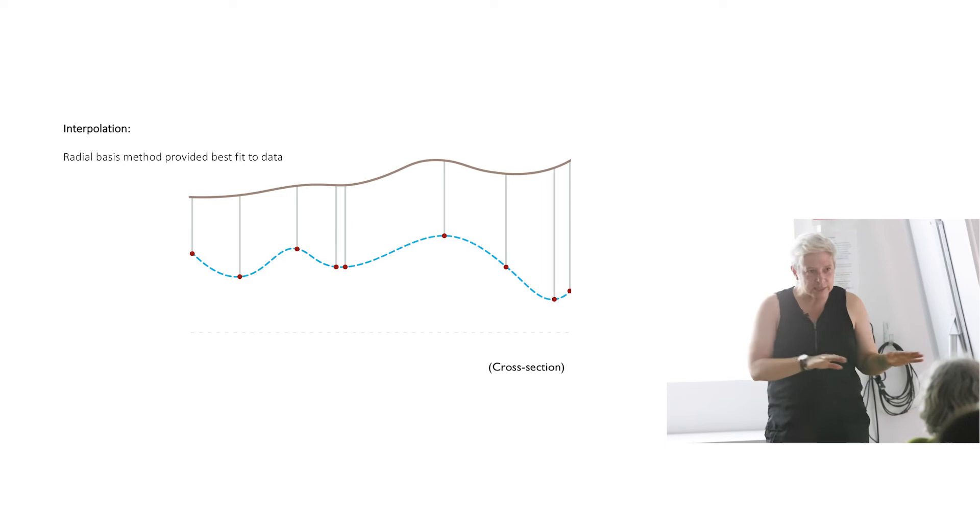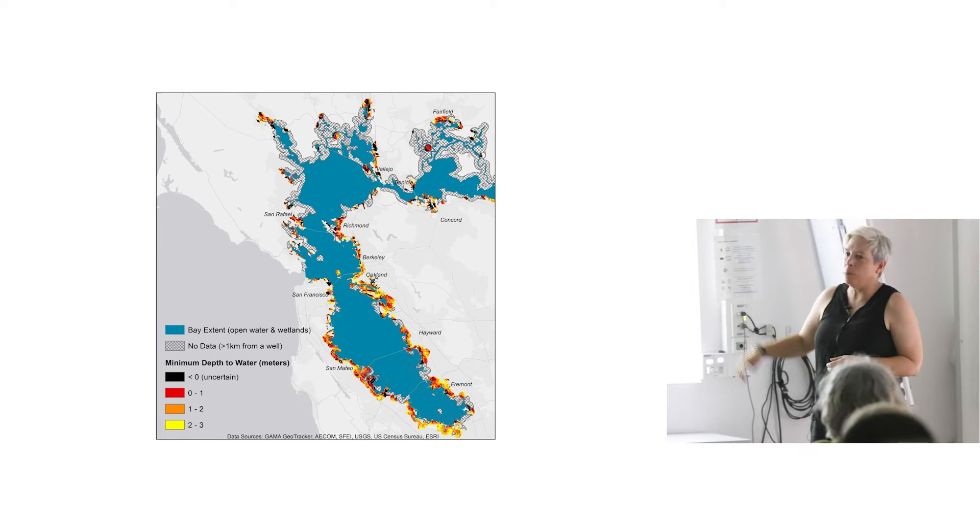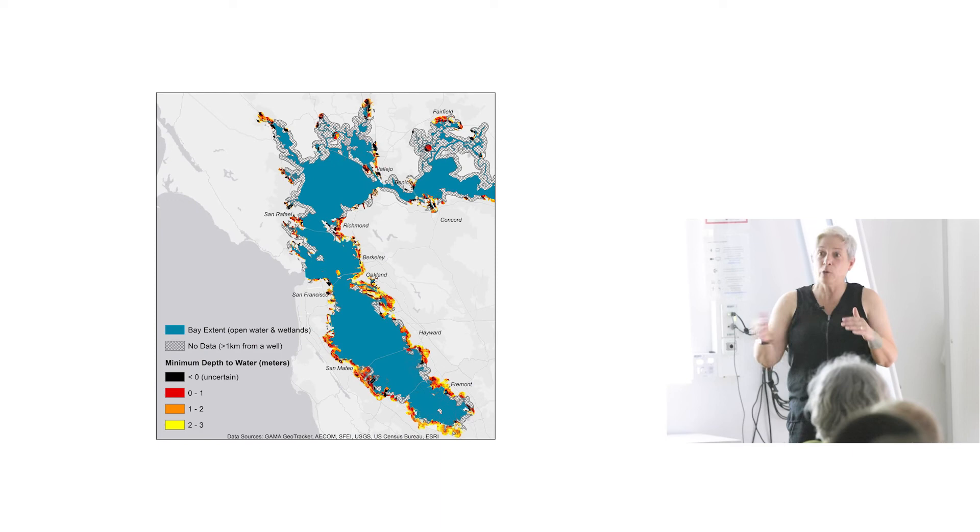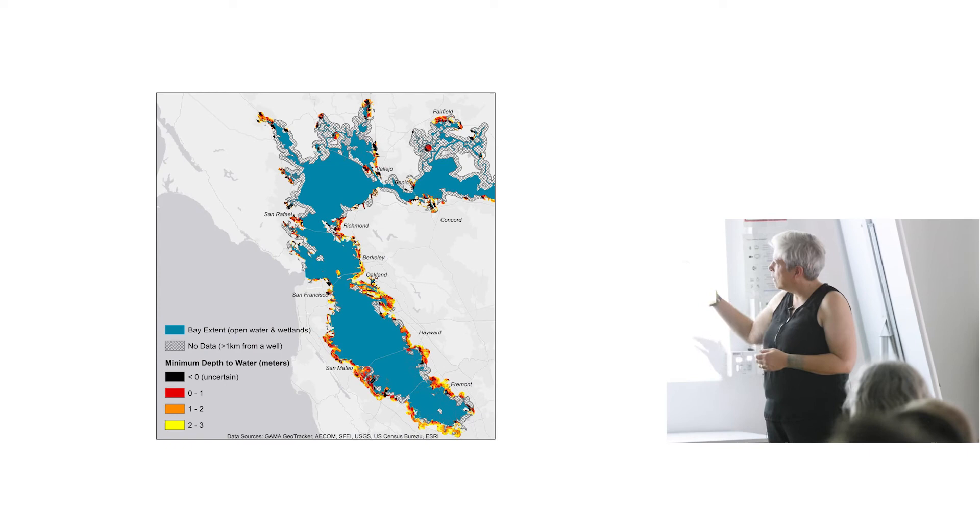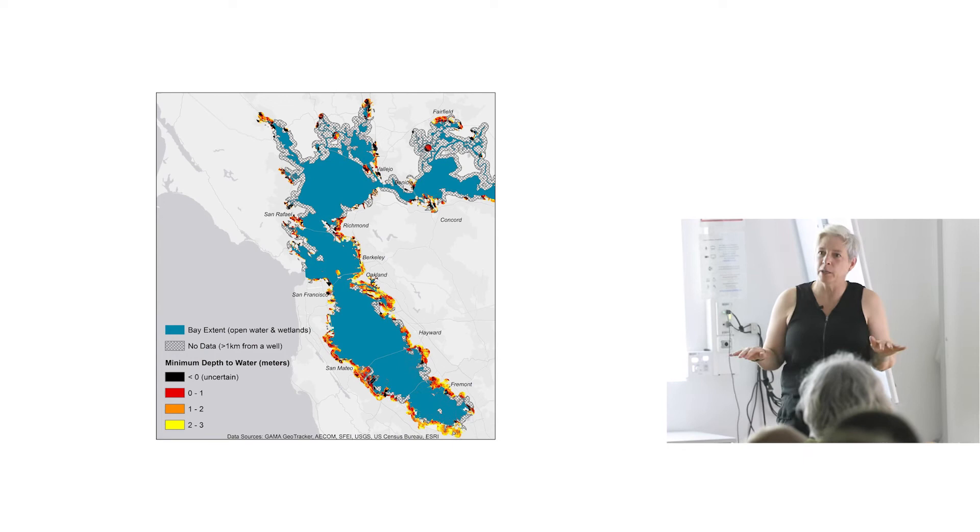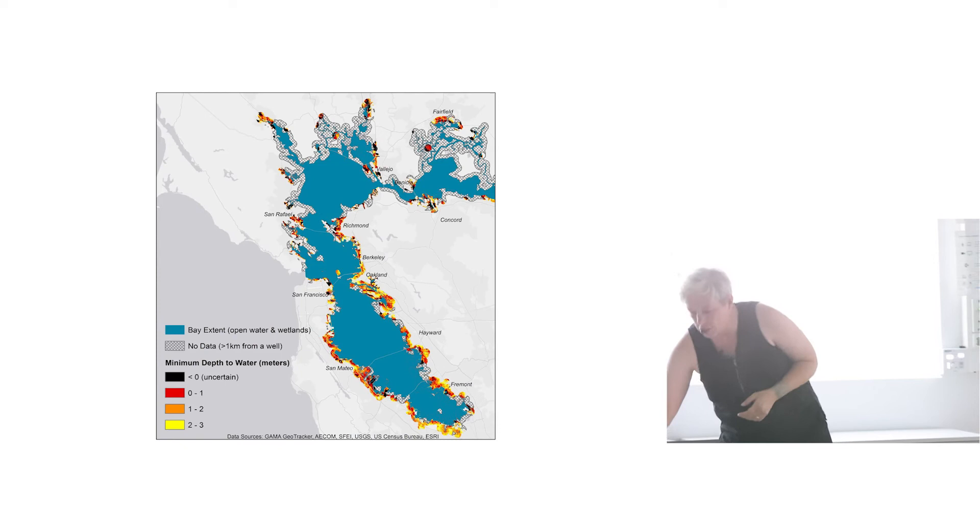We just made an interpolation among those points, which is a good way to get a first approximation. It's not based on processes. So I know it's not the right answer, but it's a good first approximation to identify where the hotspots might be of shallow groundwater. And there were many hotspots. In the red are the areas where the groundwater is within one meter of the surface. The threshold for liquefaction is about three meters. So already a very large area would be affected in a big earthquake.